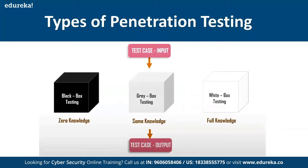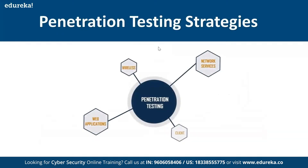There are different testing approaches. Black box testing is where you have zero knowledge about the internal environment — no source code, no internal architecture. White box testing is where you have complete information about the target including source code; it is generally done by people working internally in the organization. Gray box testing is where you have partial knowledge — not zero and not full, but somewhere in between.